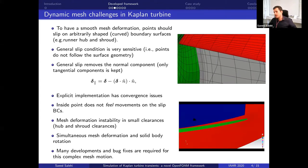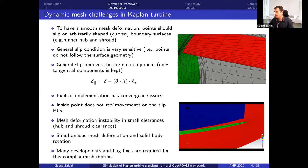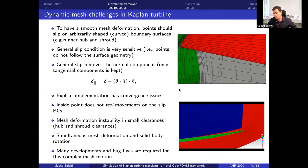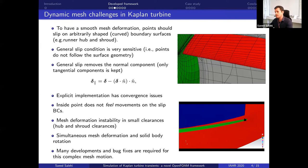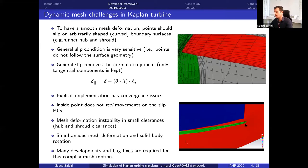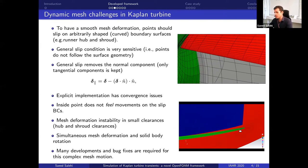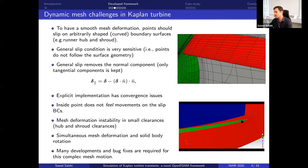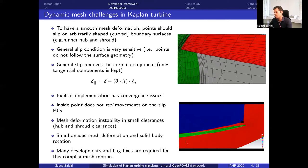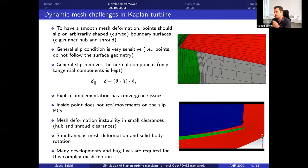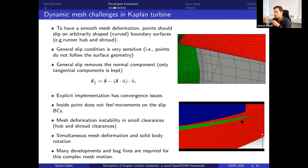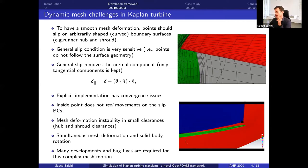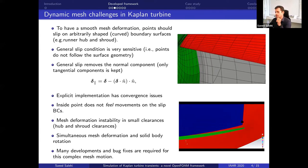Another problem is that we have very small clearances in Kaplan turbines — for example, a tip clearance of 0.5 millimeters on the leading edge side of the blade, which gets squeezed. The mesh deformation in that area is quite unstable and challenging.